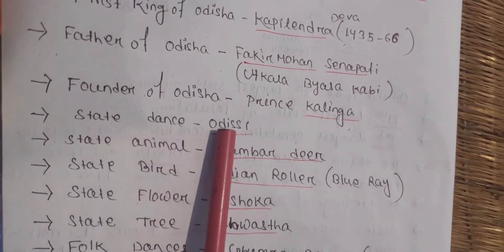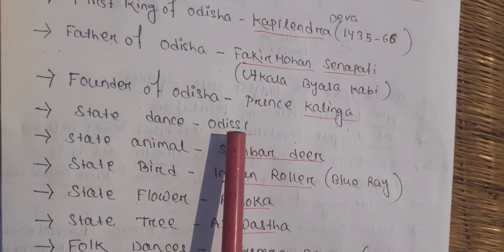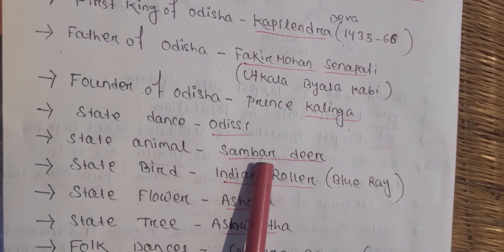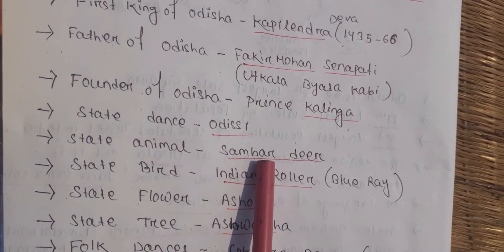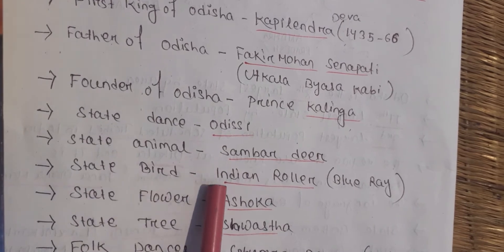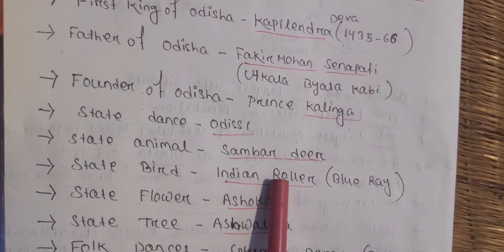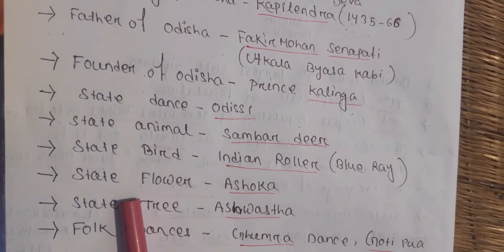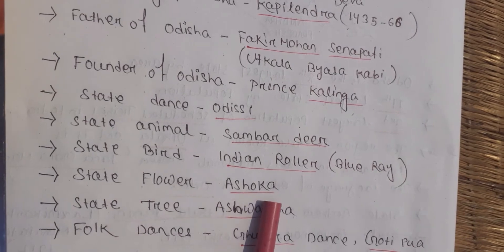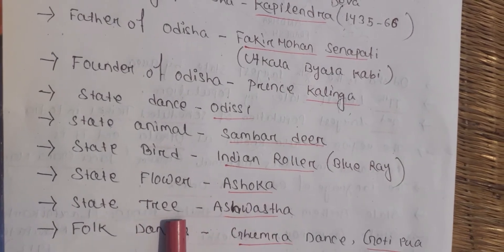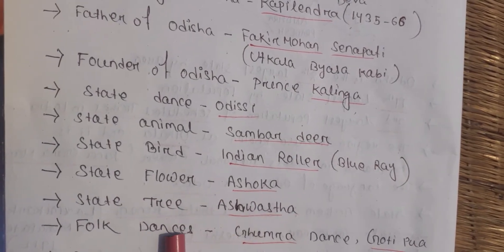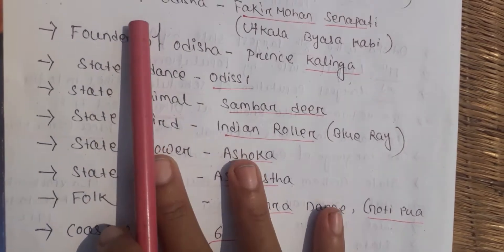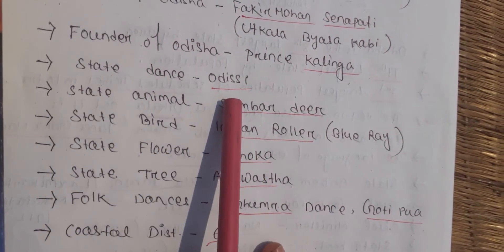The state dance of Odisha is Odissi. The state animal is the Sambar deer. The state bird is the Indian Roller, also known as the Blue Jay. The state flower is Ashoka, and the state tree is Ashwattha. The folk dances include Ghumra dance and Gotipua.